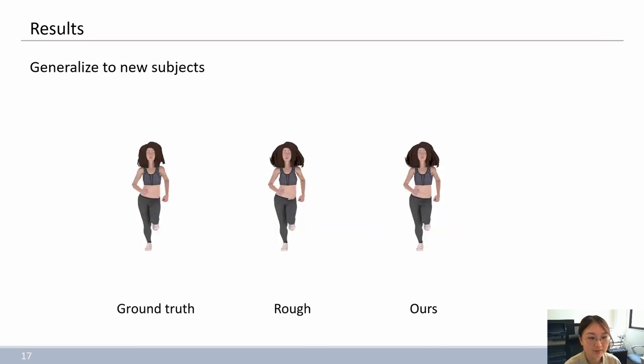Next, we show the result of generalization to a new subject. The test character model is a new subject, that its mesh geometries are completely different from characters in training set.